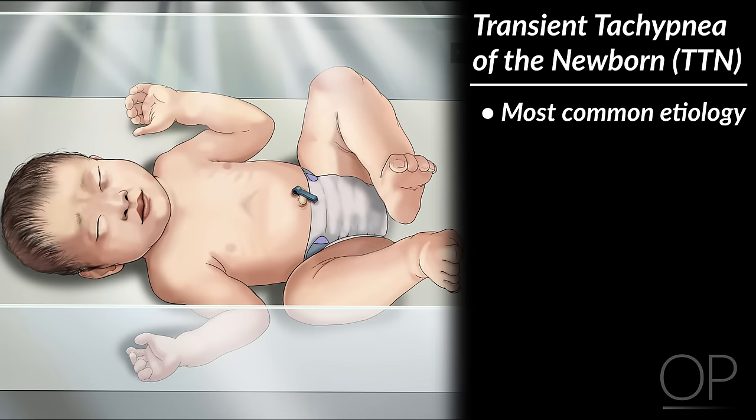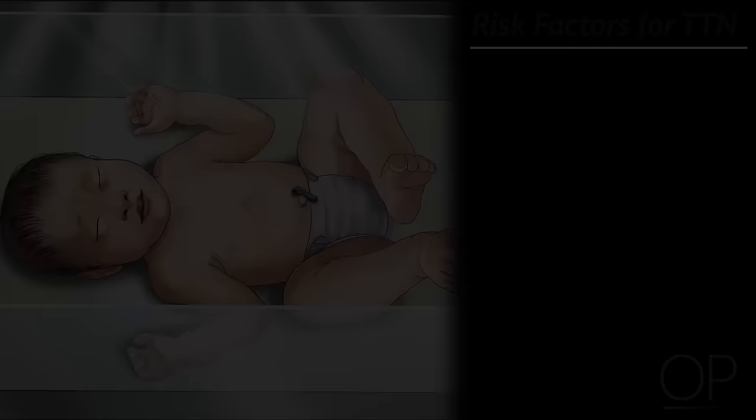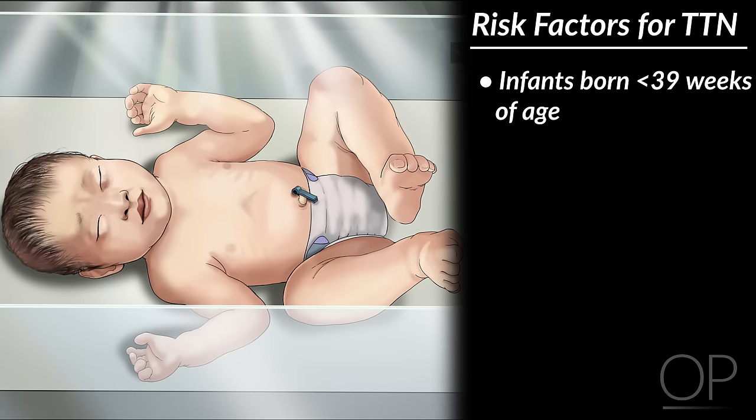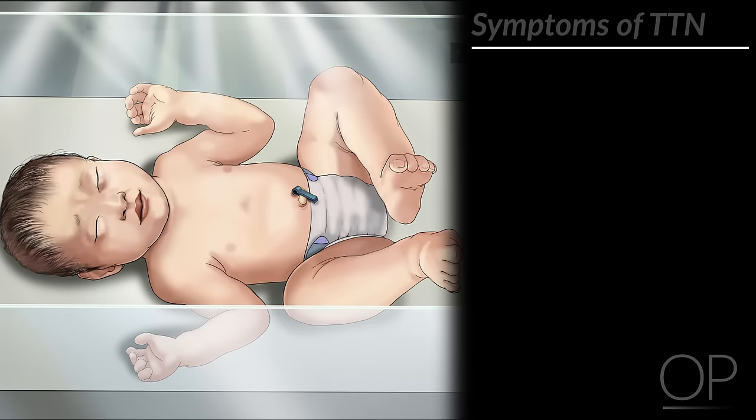Transient tachypnea of the newborn, TTN, is the most common etiology, accounting for 60% of cases of respiratory distress. TTN is due to excess fluid in the lungs due to impaired clearance of the fetal lung fluid at birth. Risk factors for TTN include infants born at less than 39 weeks of age, as well as infants born via cesarean section without labor, male infants, and infants born to mothers with gestational diabetes.